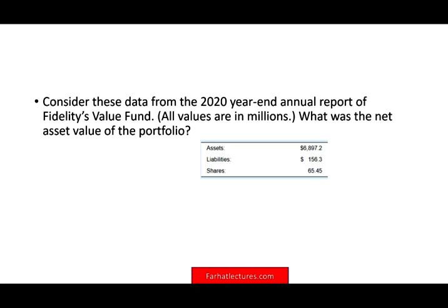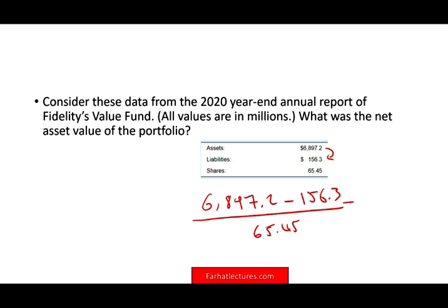Let's look at another example using data from Fidelity's 2020 year-end annual report, with all values in millions. To find the net asset value of the portfolio, we take net assets — which is assets minus liabilities — and divide by the number of shares outstanding, which is 65.45 million. This gives us a net asset value of $102.99, almost $103 per share.